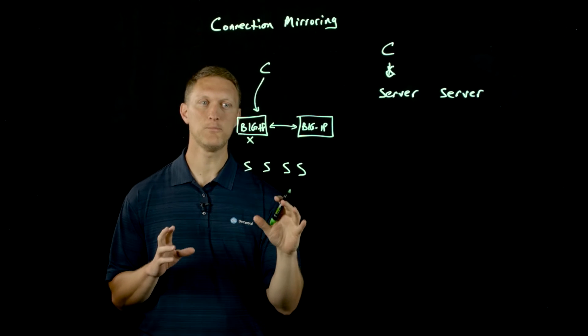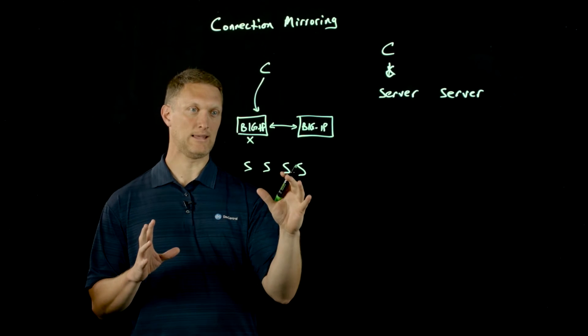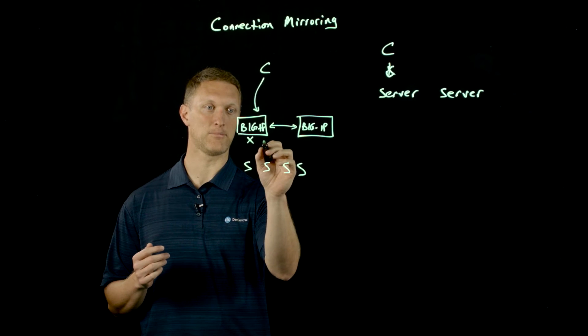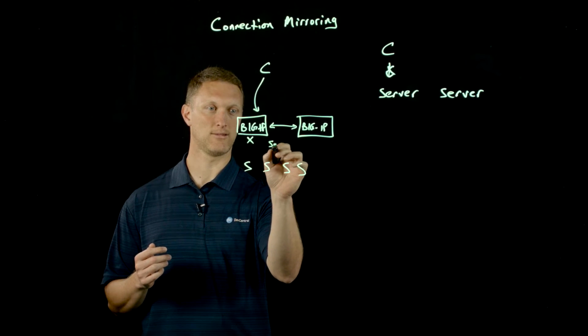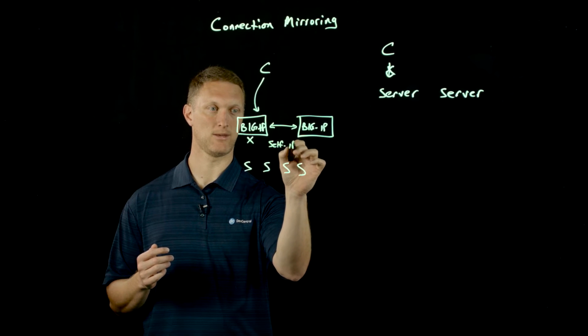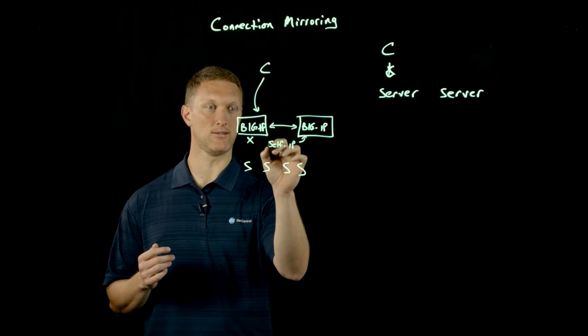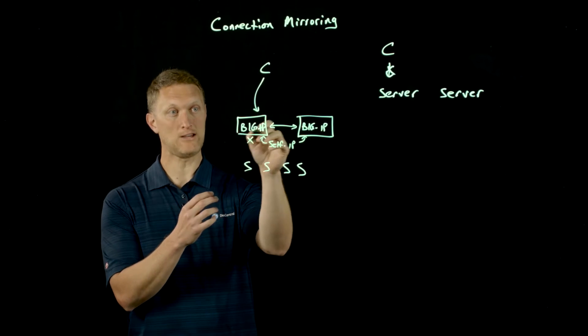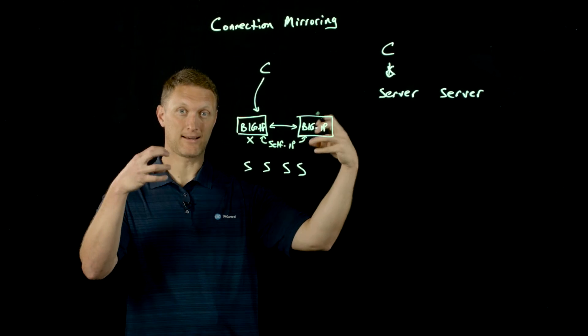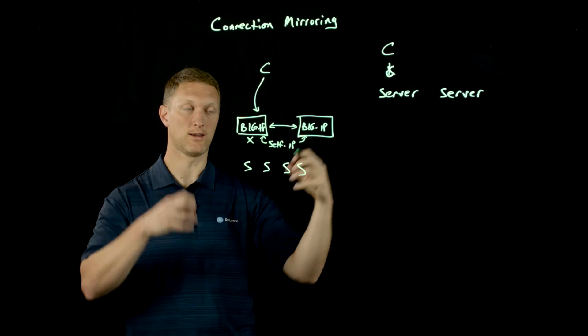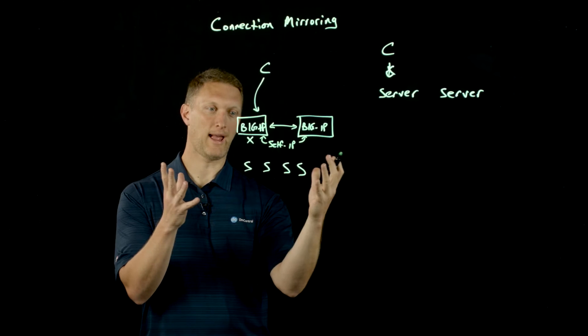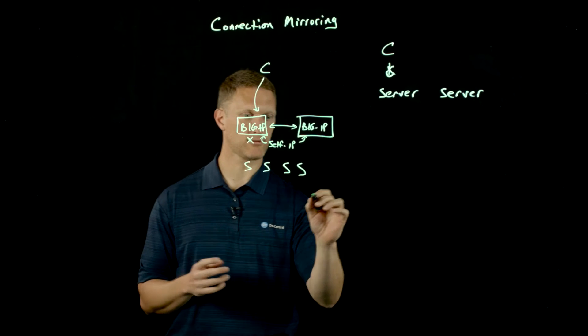A few points to make on this is that when you set this up, you actually identify a self IP on each of these BIG-IP systems, and that self IP is going to be the IP address that each of these has to connect with for this connection mirroring.